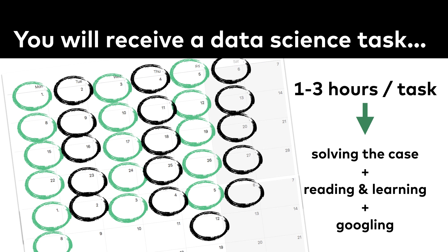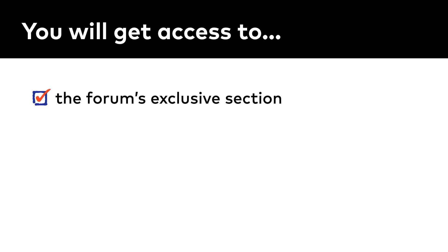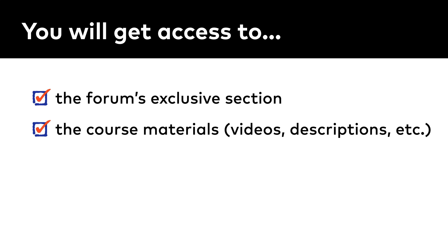Occasional tasks might require some proactivity, and you should investigate on the internet by yourself, just like during real-life data projects. If you are stuck, there will be three ways out. A: You can try the juniordatascientist.com forum's exclusive section, accessible only to you and your fellow online course participants, where you can help each other with the tasks. B: You can also take a look at the solution videos and codes that I will upload for each task. And C: You can send me an email as well, and I'll be here to help.